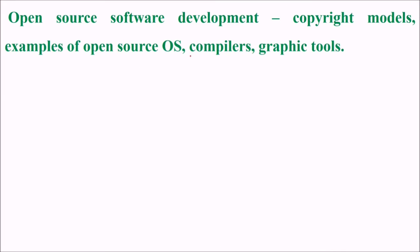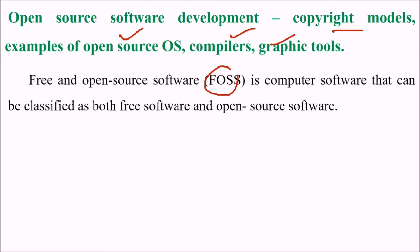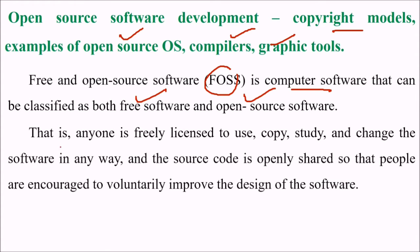So what is open source software development? What are the copyright models, examples of open source operating system compilers and graphic tools? FOSS — free and open source software — is just like any other software that can be classified as both free software and open software. Anyone is freely licensed to use, copy, study and change the software in any way they want.